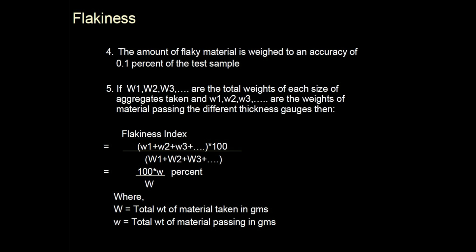For the calculation of the flakiness index, we need two types of weight. The first weight is the weight of the 200 pieces of aggregate, and the second weight is the weight of material passing through that thickness gauge slot.